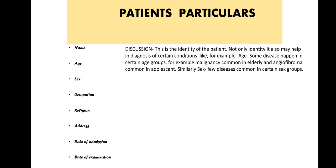First you have to write down the identity of the patient. That includes age, sex, occupation, religion, address, date of admission, and date of examination. These details not only help to identify the patient but also have clinical importance, as some diseases are common in certain age groups, occupations, and residences.